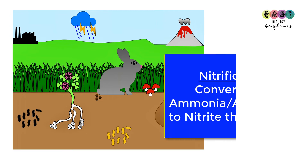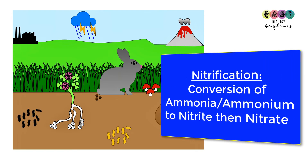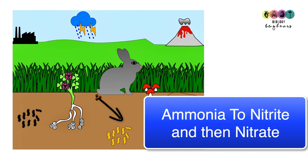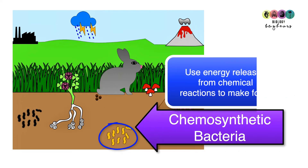Another important step in the nitrogen cycle is nitrification — the conversion of ammonia or ammonium to nitrite, then to nitrate. Remember, ammonia is very quickly converted to ammonium. Animals produce a lot of waste containing nitrogen-containing compounds, and bacteria and fungi play a hugely important role in breaking down this organic matter and releasing ammonia or ammonium into the soil. This is then quickly converted by bacteria to nitrite then to nitrate. These bacteria are chemosynthetic — they use energy released from chemical reactions to make their food.